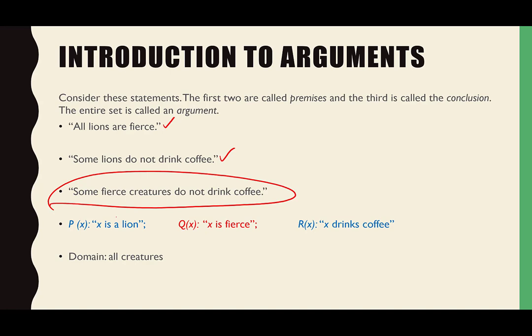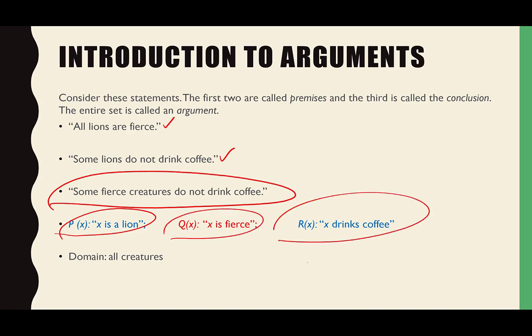Let's take a look at how this would play out if we were to formalize this. Let P(x) mean 'x is a lion,' Q(x) mean 'x is fierce,' and R(x) mean 'x drinks coffee.' The domain is all creatures.